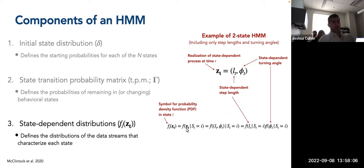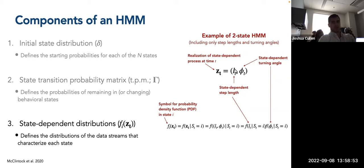This equals f(z_t | s_t = i), meaning for each realization of step lengths and turning angles we assume they differ based on whatever behavioral state you're in at time t. Breaking it down further: step lengths and turning angles at time t given behavioral state i can be thought of as the product of the probabilities of step lengths and turning angles for that behavioral state, differing per state.